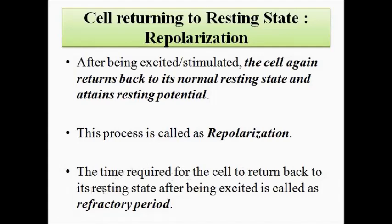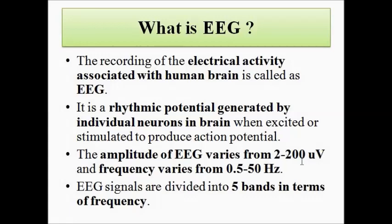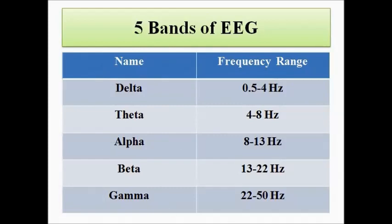The refractory period is the time for the cell to return to its resting state from the excited state. For a normal cell, in the resting state the potential is approximately minus 90 millivolts. Whenever a stimulus is present, the cell undergoes depolarization to reach the action potential, and after the refractory period it returns to the resting potential. For EEG specifically, the amplitude ranges from 2 to 200 microvolts and the frequency range is from 0.5 to 50 hertz.